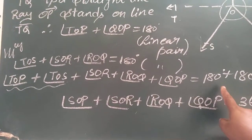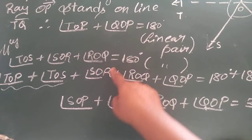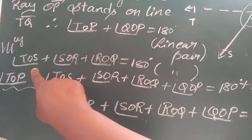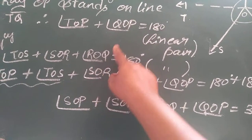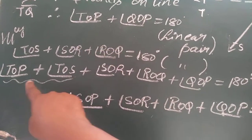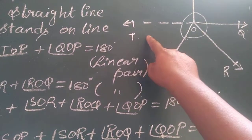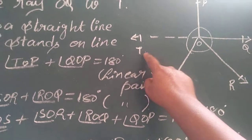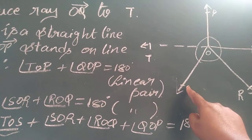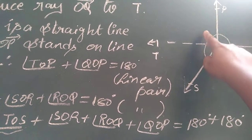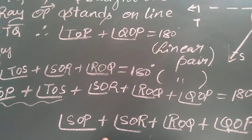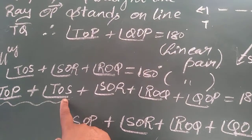In this step I have added both LHS values together. I wrote angle TOP, then angle TOS, angle SOR, angle ROQ, and finally angle QOP. Because when I add angles TOS and TOP together, they form one full angle SOP. So I replaced them with angle SOP, and the remaining angles are written as they are.